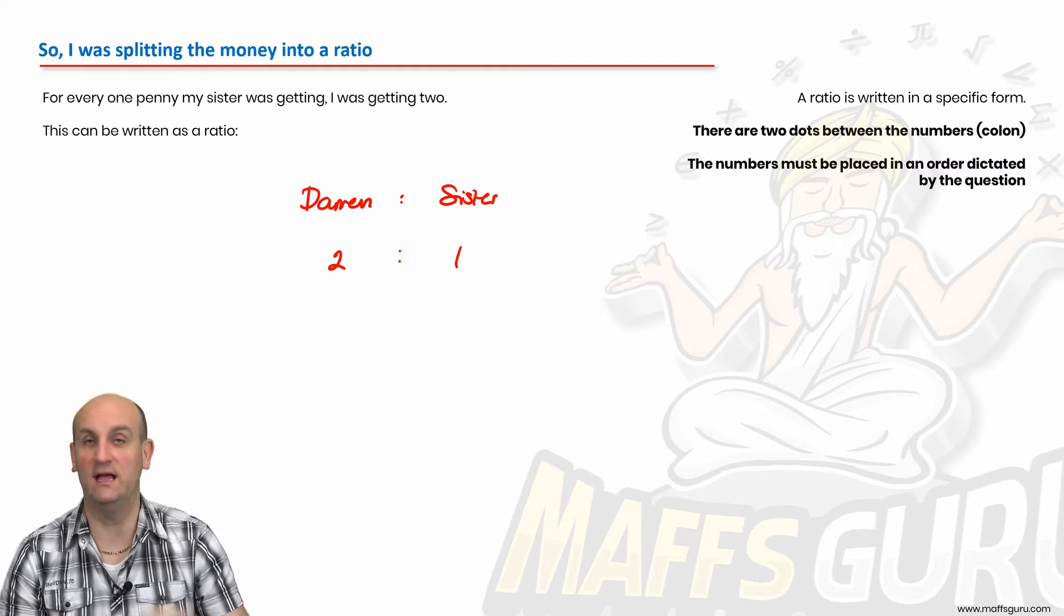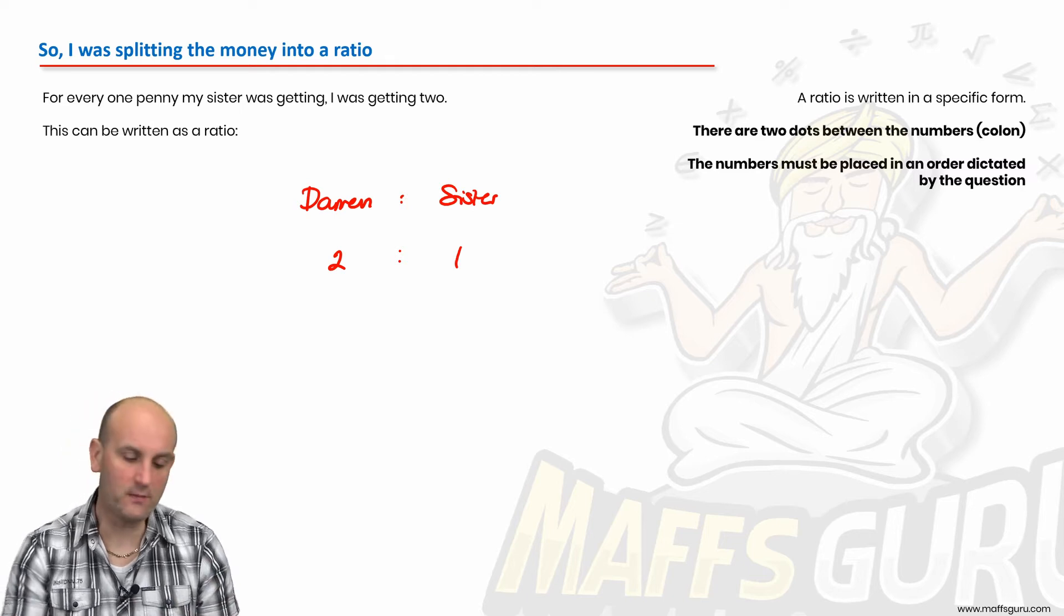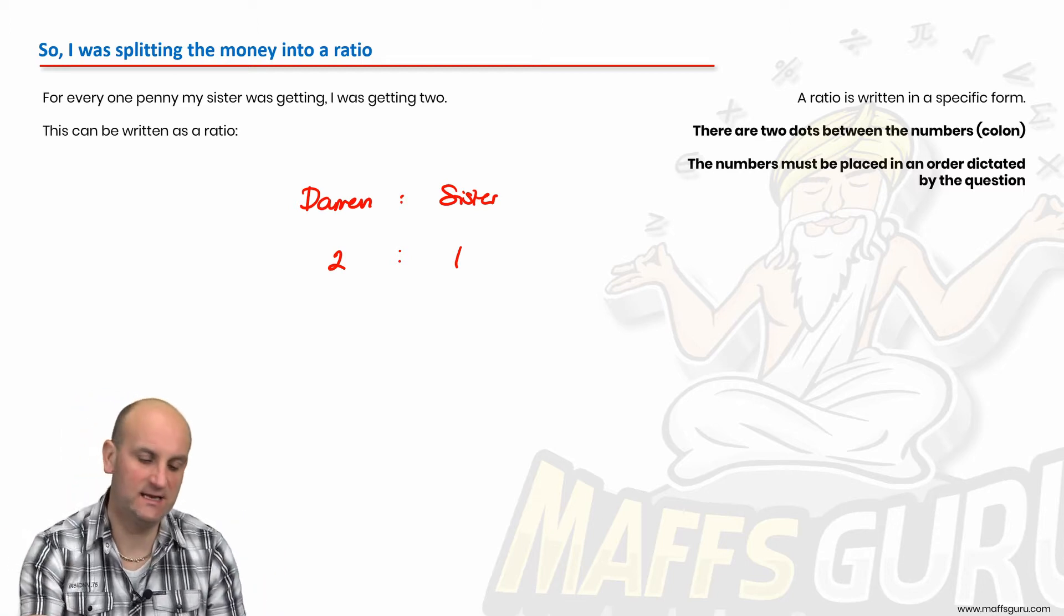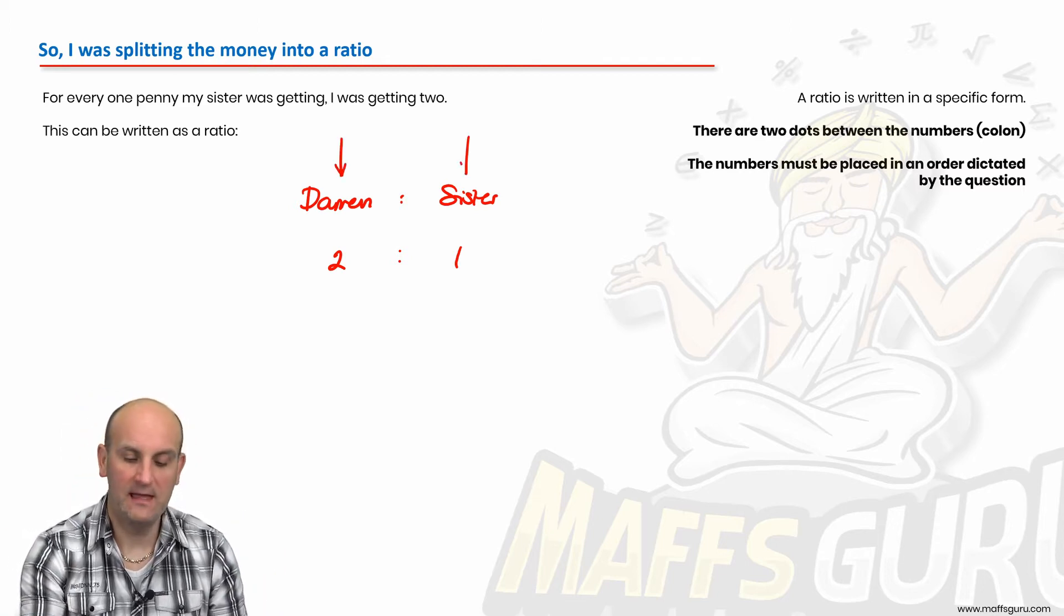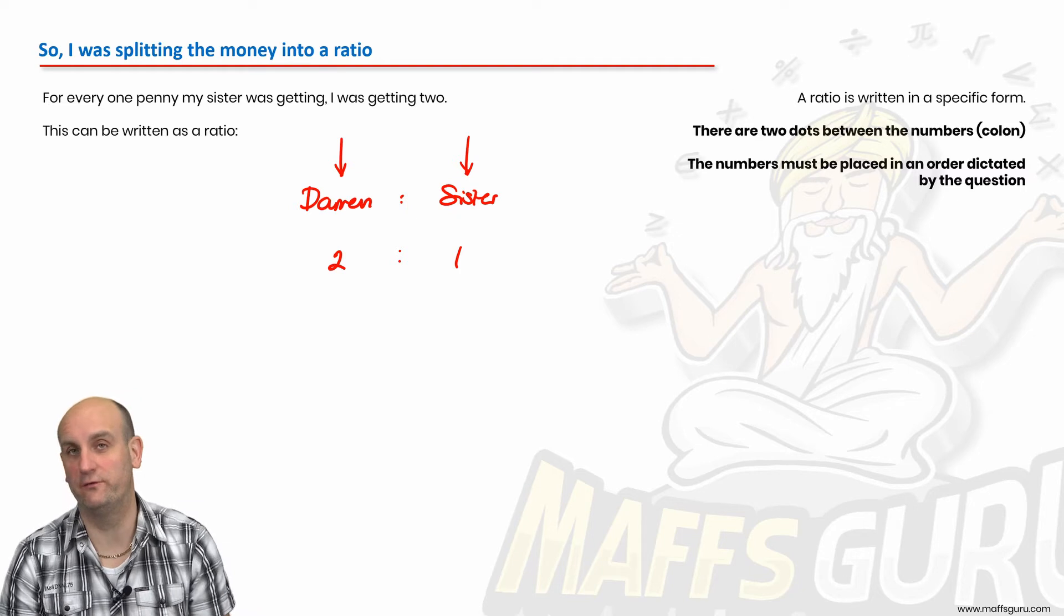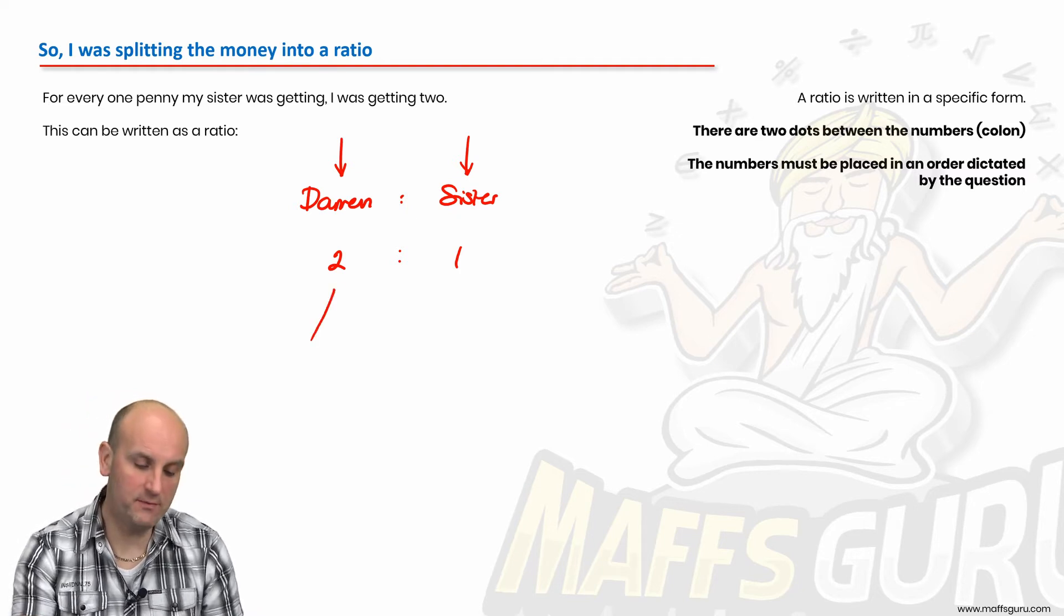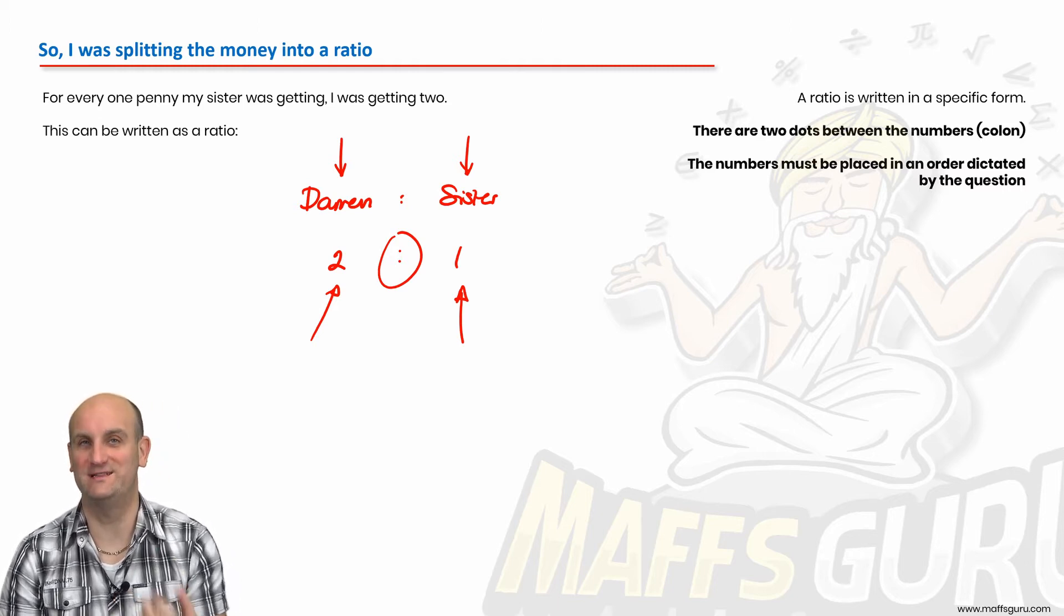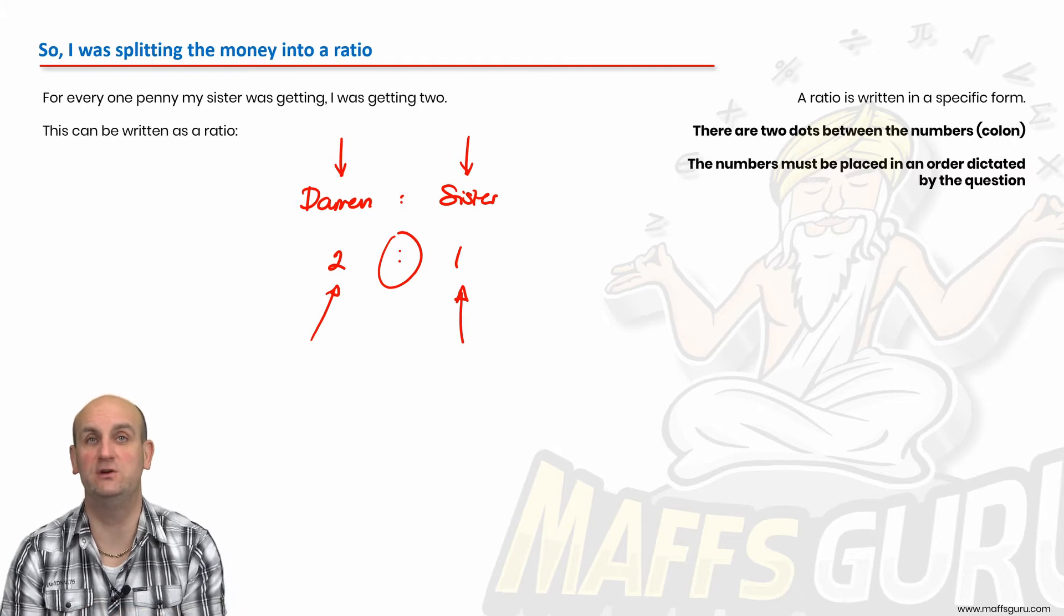What is a ratio? A ratio has a defined order. So it's important to know that when you split things into a ratio, what are you splitting? There is Darren and sister. Those are the titles of the ratios. There are numbers in ratios. And the most important part are those two dots in between. That's what tells us it's a ratio. So every time you write a ratio now, number, dot, dot, number.